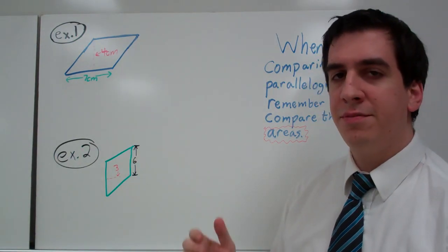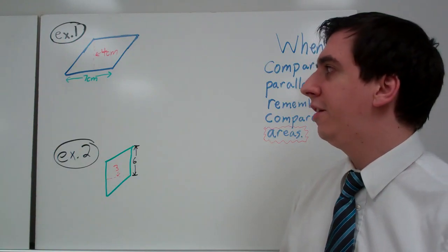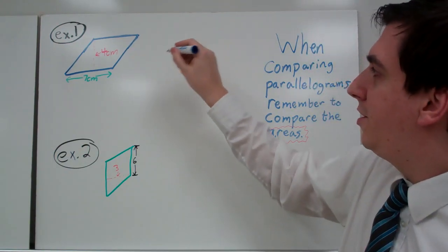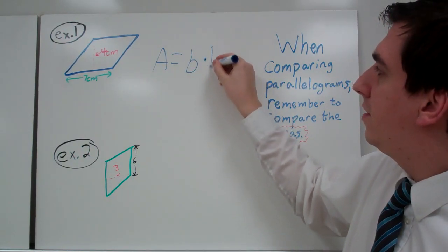We're going to find the areas of some parallelograms. And remember, if we have a rhombus, we can use the same equation here. To find the area of a parallelogram, we're going to use this equation. The area equals the base times the height.